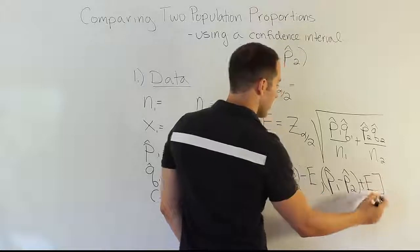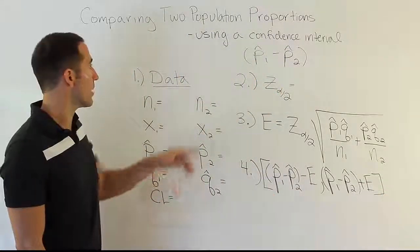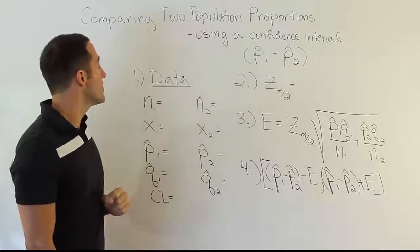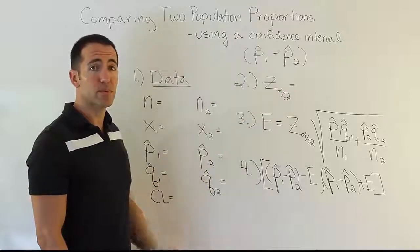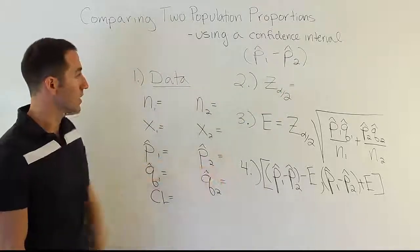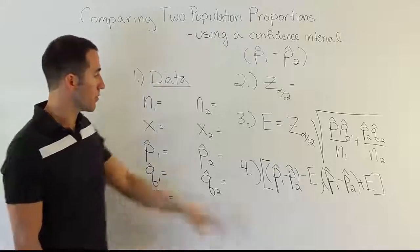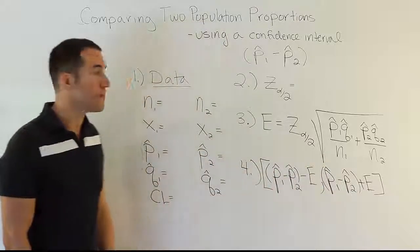But, it's still going to be p-hat 1 minus p-hat 2 and then plus the error. And then, we'll finish up our set of steps to find the confidence interval to compare two population proportions. So, we use the sample proportions as our point estimator for the difference between the two population proportions. And, we perform these four steps, which will eventually give us a confidence interval which we will learn how to interpret, just like we interpreted the intervals that subtracted two means.